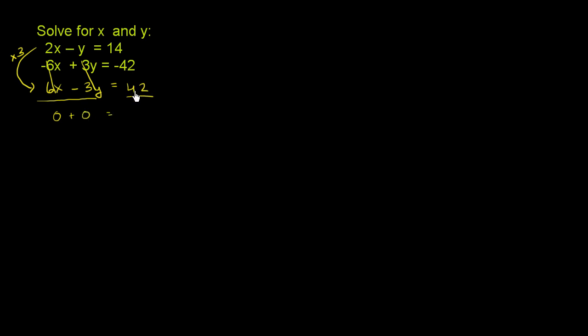And then finally, you get negative 42 plus 42. Well, that's 0. So we end up with just 0 is equal to 0, which is clearly true, but it's not putting any constraints on the x or y.